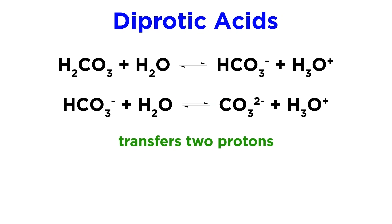But some acids can transfer more than one proton. An example of this is carbonic acid, or H2CO3. This is a diprotic acid, meaning that it contains two acidic protons. It can deprotonate twice in succession, first giving the bicarbonate anion, and then again to give the carbonate anion.